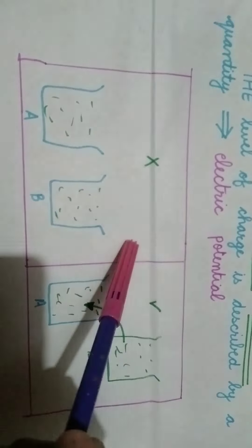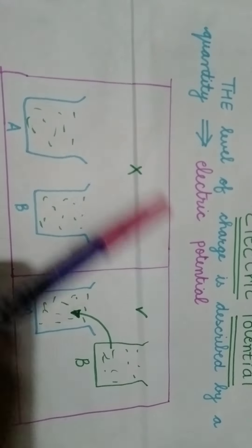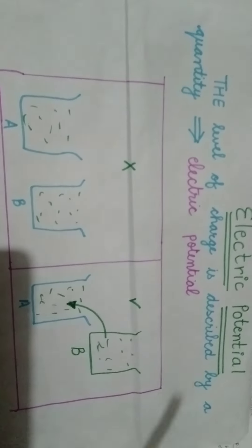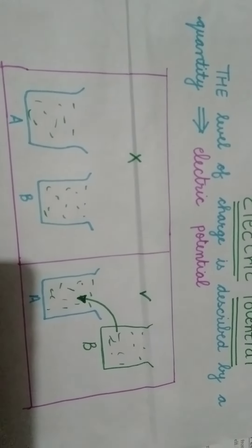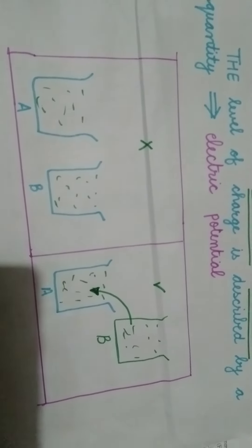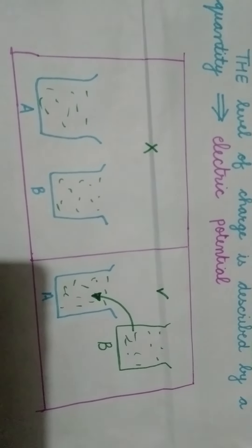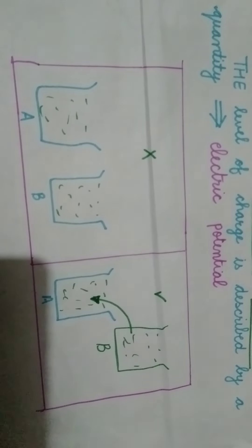With a small definition in it. First, let's read the definition: the level of charge is described by a quantity called electric potential. If you search for the definition of electric potential, you would get a very complex definition, but here I am telling you the simplest definition ever.